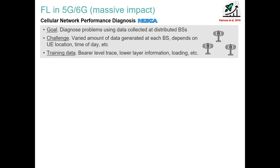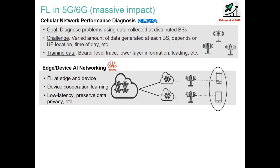Here we have three base stations, for instance, and they want to collaboratively build a model and get information about the traffic load in the network. Huawei has used it for their AI networking at the edge and in devices — meaning base stations and smartphones.